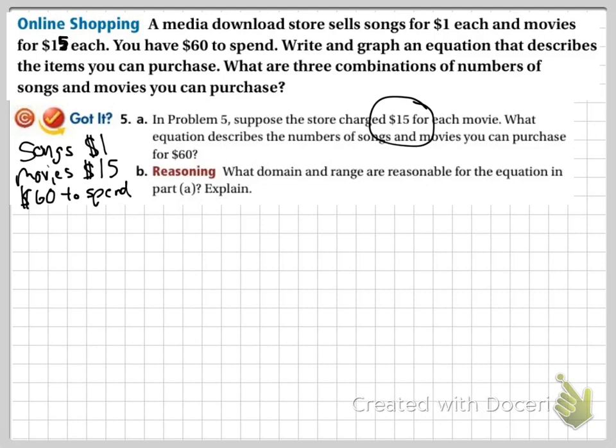If I buy one song, it's going to cost me $1. If I buy five songs, it's going to cost me $5. If I buy 100 songs, it's going to cost me $100. I figure that out by doing the cost of the song, $1, times the number of songs. So let's call songs X and movies Y. This is going to be 1X plus however many movies I buy. If I buy one movie, it costs $15. If I buy two movies, it costs $30. So I'm taking the number of movies and multiplying it by 15. So this will be 15Y. And however much I spend, however much the songs and movies cost, needs to equal $60.